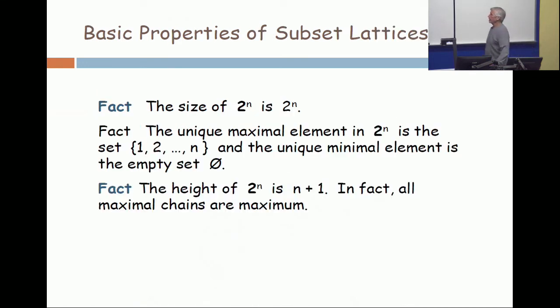Basic properties. The size of boldface two to the n is two to the n. Now look at this line carefully, and hopefully your vision is good enough to see that the first two is boldface and the second one is not. So the second two to the n is just a number, the number two raised to the nth power. The first one, the boldface two, is the two-element chain, zero less than one raised to the nth power. So when you take a two-element set and raise it to the nth power, you get the n tuples of zeros and ones. And that explains the notation, boldface two to the nth power.